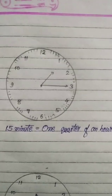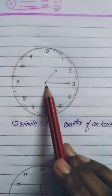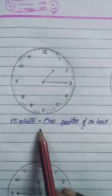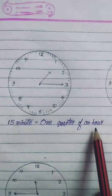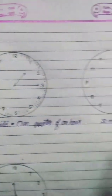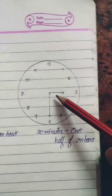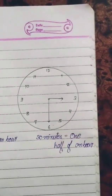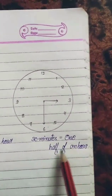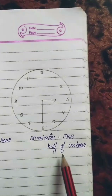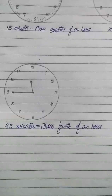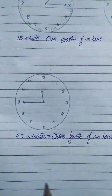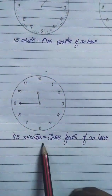When the minute hand is at 3, that means 15 minutes — we call this one quarter of an hour. When the minute hand is at 6, that means 30 minutes — it is one half of an hour. When the minute hand is at 9, that means 45 minutes — 45 minutes is three-fourths of an hour.